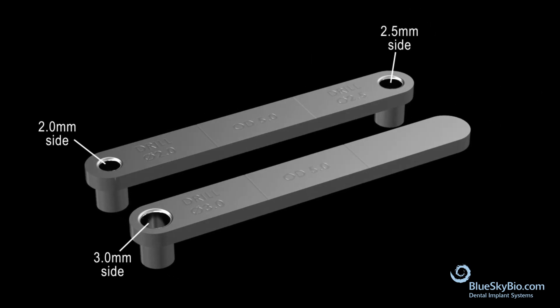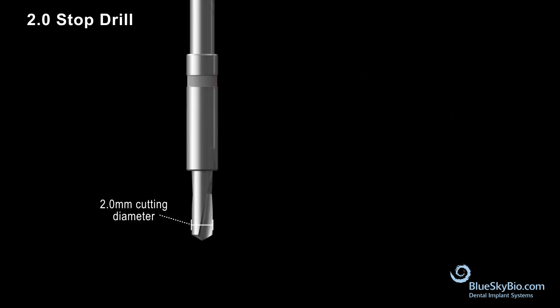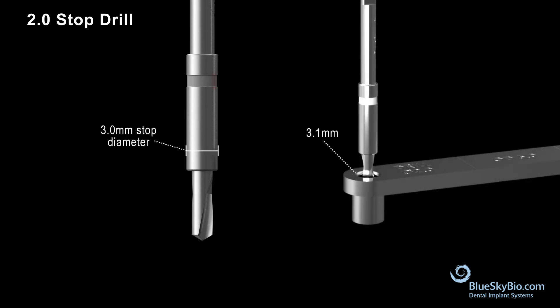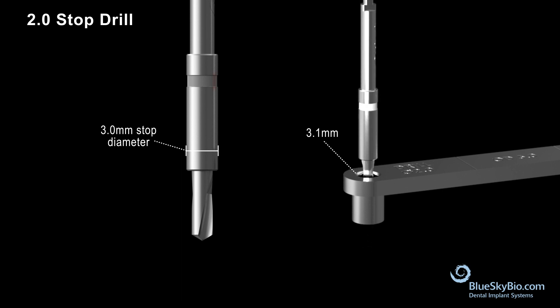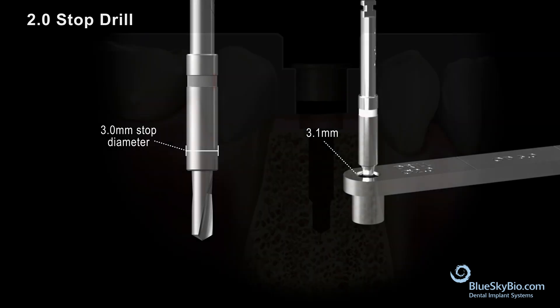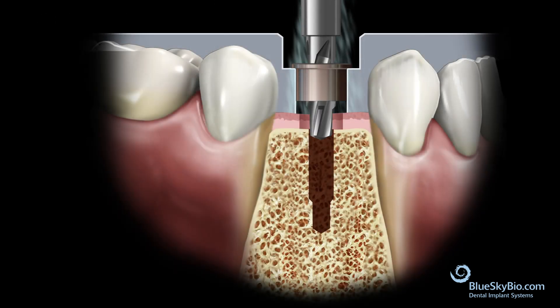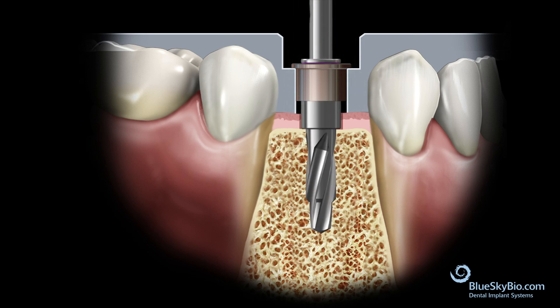The holes are marked by the diameter of the cutting aspect of the drill. The smaller diameter is the cutting diameter — in this case 2.0 millimeters. This is the stop diameter of the drill. The hole in the key is large enough to allow the stop section of the drill to pass. Each diameter drill has a specific stop diameter that matches a specific key. The guide tube will precisely guide the trajectory of the drill.